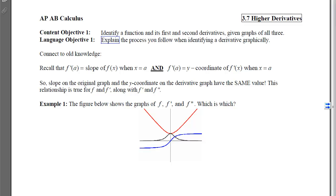This is section 3.7, Higher Derivatives. Our first objective is to identify a function along with its first and second derivatives when we're given a graph of all three.